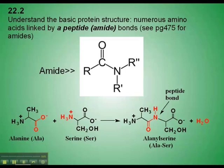The type of bond that holds individual amino acids together is called a peptide bond. Here's alanine and serine joined together at this point, and this is called a peptide bond.